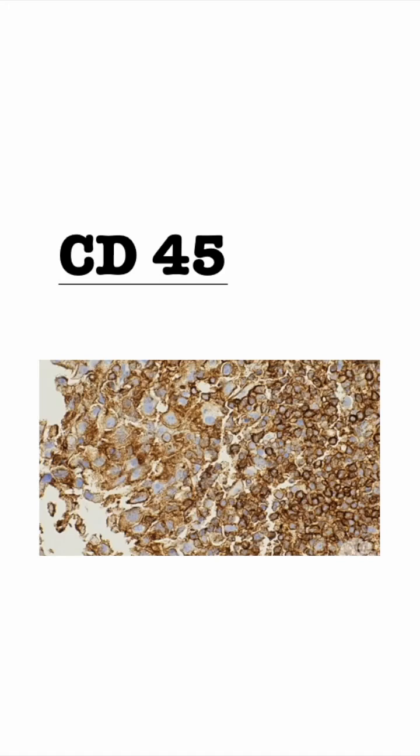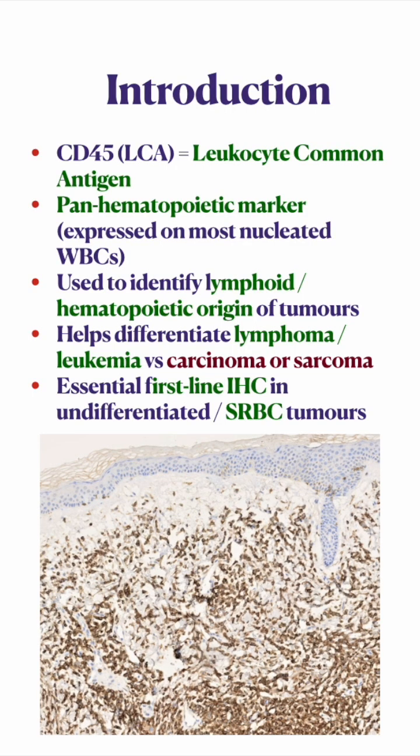Hello everybody. This video is on IHC marker CD45, also known as LCA — that is your leukocyte common antigen. CD45, also known as leukocyte common antigen, is a pan-hematopoietic marker. It is one of the most common screening markers used for metastatic tumors and for poorly differentiated tumors.